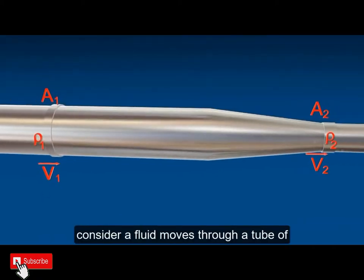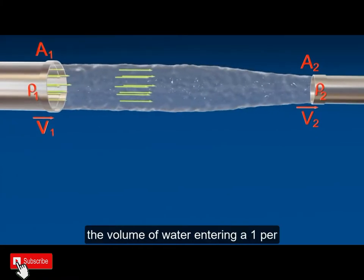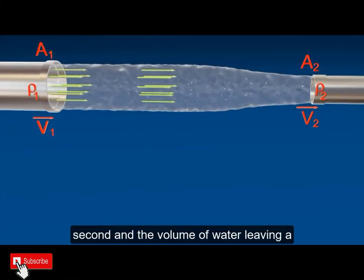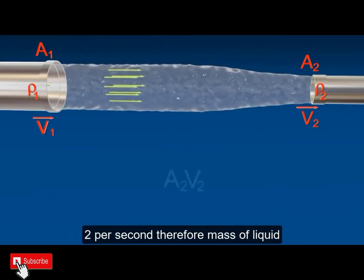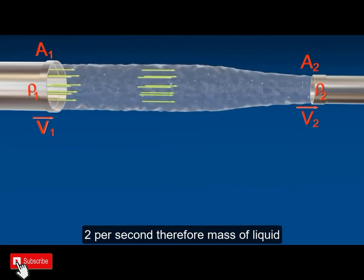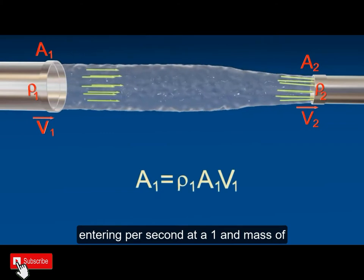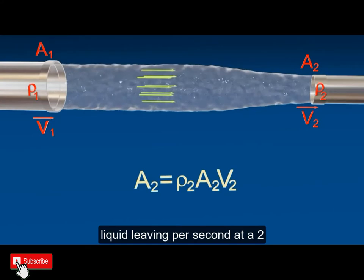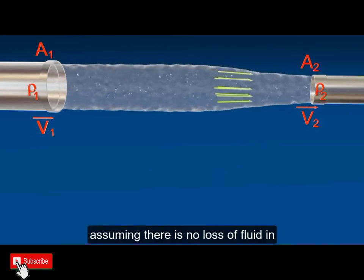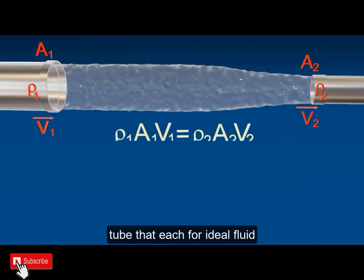Consider a fluid moves through a tube of area of cross section A₁ and A₂ respectively. Mass of liquid entering per second at A₁ and mass of liquid leaving per second at A₂, assuming there is no loss of fluid in tube, that is, for ideal fluid.